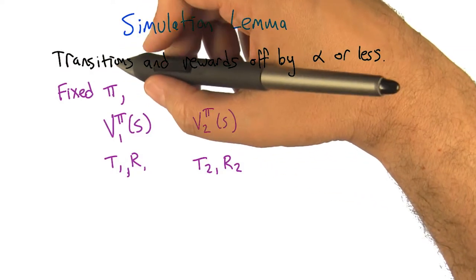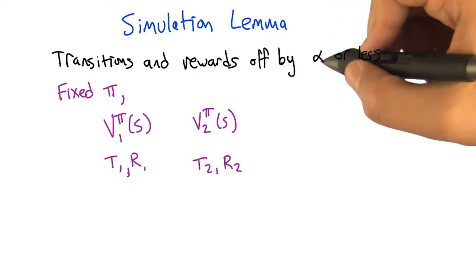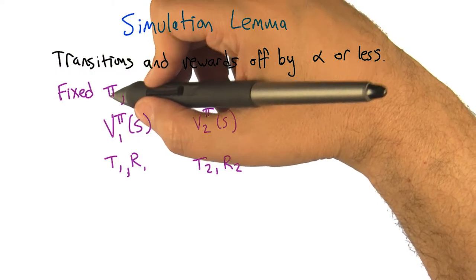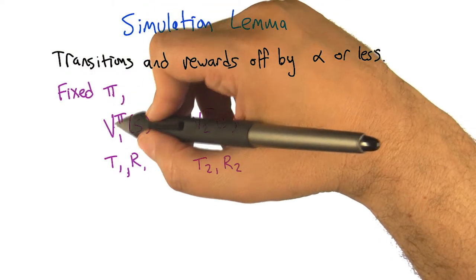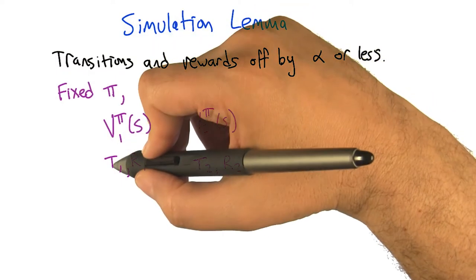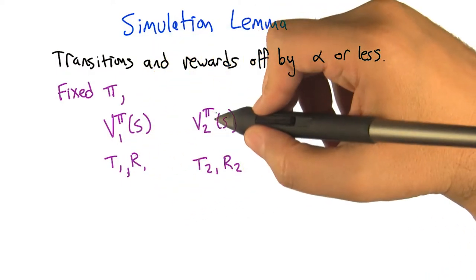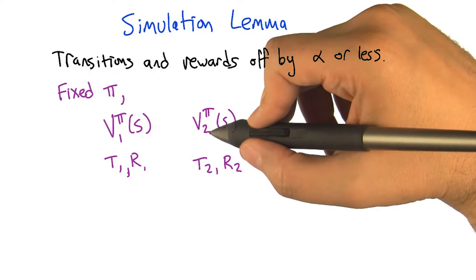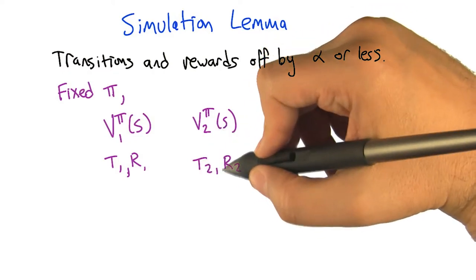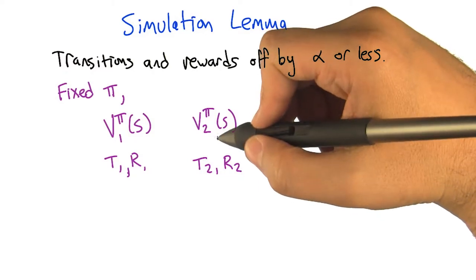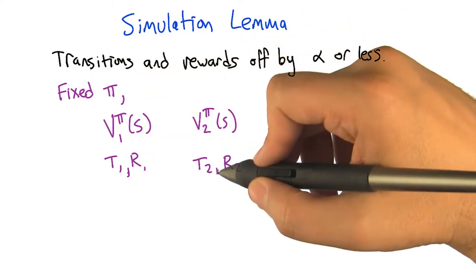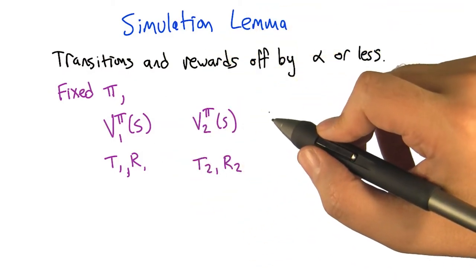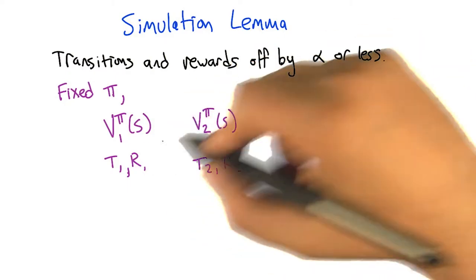The idea is that we have transitions and rewards that are off by alpha or less, and we want to think about what happens if we adopt some policy pi — any policy pi. We want to compare the value we get for following pi in MDP1, which has transition function T1 and reward function R1, to the return we get for following policy pi in MDP2, which has transition function T2 and reward R2. If those are near each other, given that T1 is near T2 and R1 is near R2, then that gives us the ability to have accurate simulations. We can use our model of the MDP to simulate what's going to happen in the real MDP.